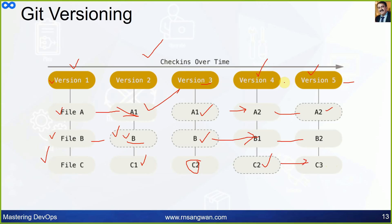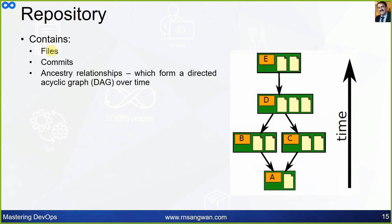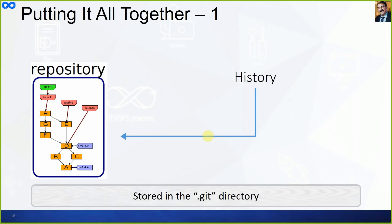Source code contains directories and files. The substance of a software configuration in a source code repository consists of files, commits, and ancestry relationships — forming a directed acyclic graph. Git keeps complete tracking of each version back to the original, maintaining the full history of previous versions.